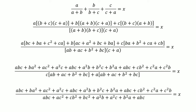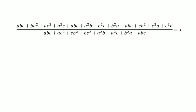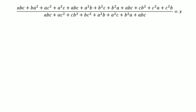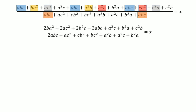Now, looking at our required expression, taking the numerator at the top of the page, we can identify common terms: ABC appears three times, BA squared appears twice, C squared A appears twice, and B squared C also appears twice. In the denominator we have two ABCs. After collecting these common terms, we arrive at a simplified expression.